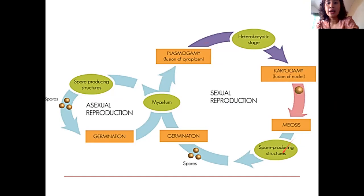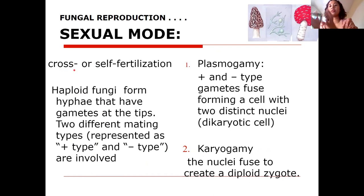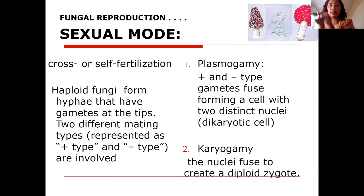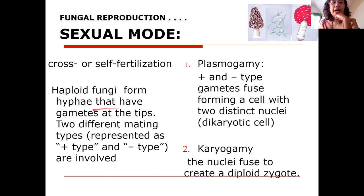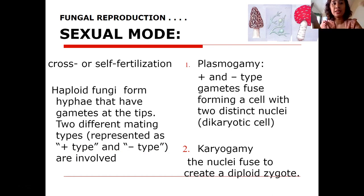In sexual reproduction, fungi with plus-type and negative-type gametes at the tips of their hyphae will fuse. Plasmogamy fuses cytoplasm, with nuclei still distinct, forming a dikaryotic cell. Karyogamy fuses the nuclei, forming a diploid zygote. The positive type (shown in red) and negative type (shown in green) fuse cytoplasm first in plasmogamy, then nuclei in karyogamy. The resulting spore germinates and can extend further.